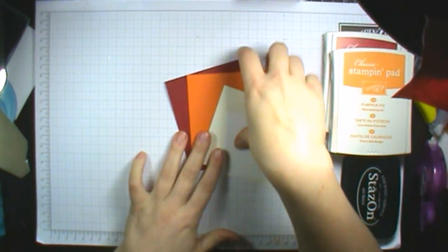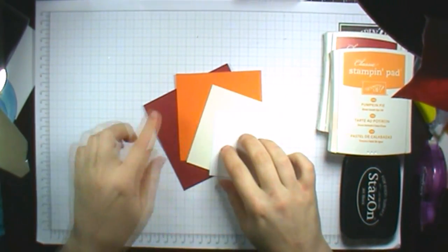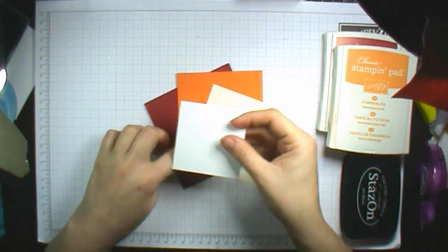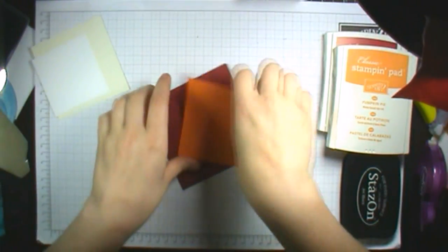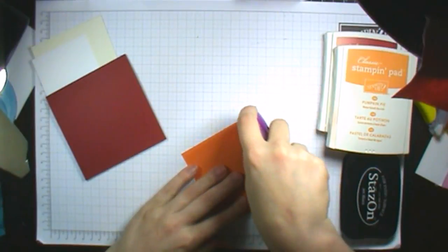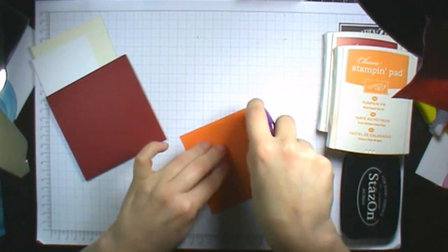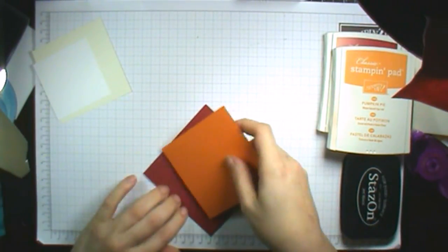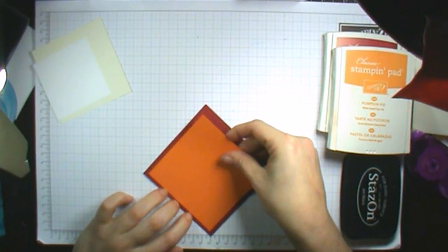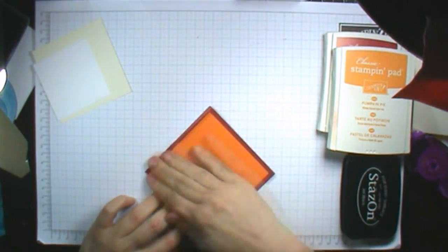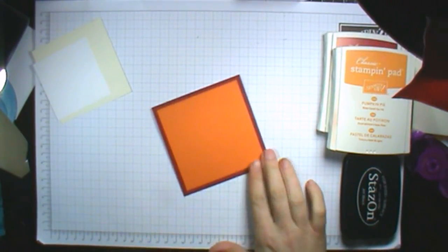We'll also be using four cardstocks and Whisper White. To start with, we will attach our Pumpkin Pie to the Cherry Cobbler and then we can sit that piece aside.